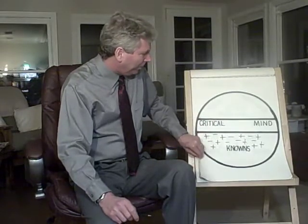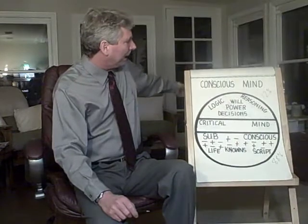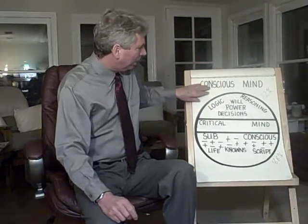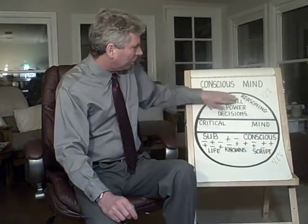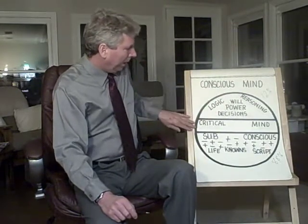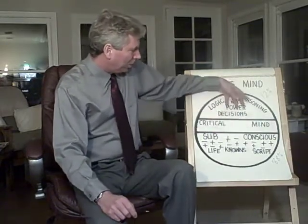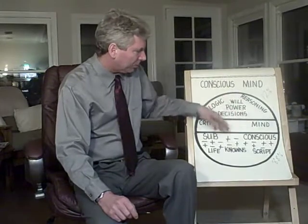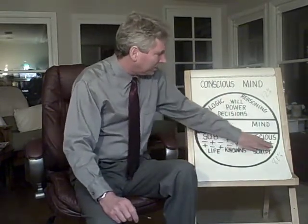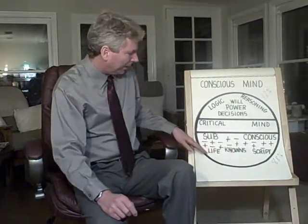Now, as that critical area of mind forms, it splits the mind up into layers. Up above here is the conscious mind. That's where you have your logic, your reasoning, your willpower, and your ability to make decisions. And then, of course, you have the critical area of mind that filters all the information and only accepts what's been learned before. And then down here is everything that you learned as a kid growing up, and that becomes the subconscious mind.